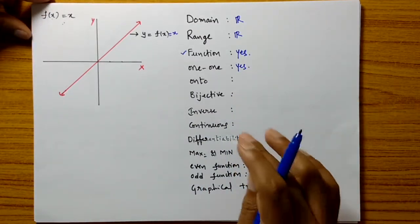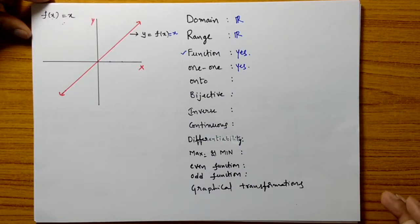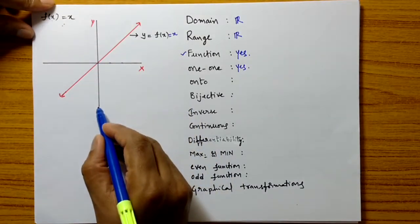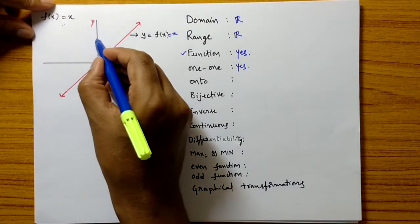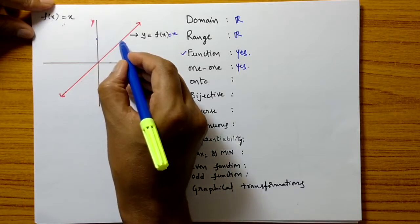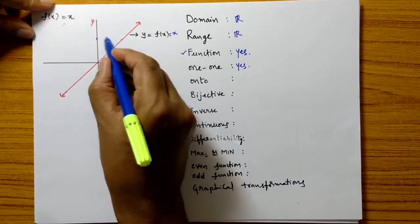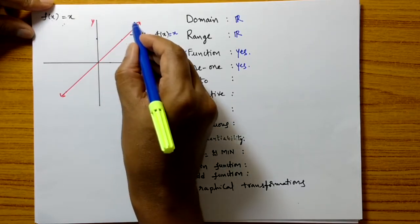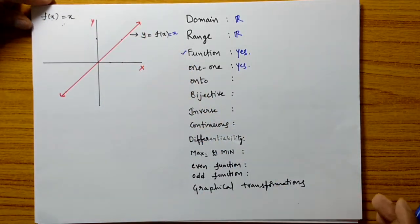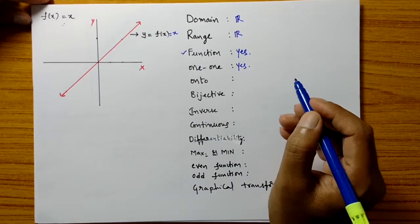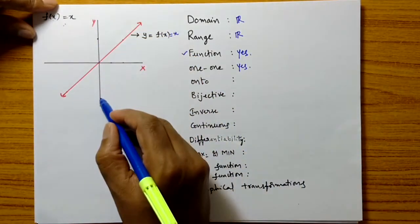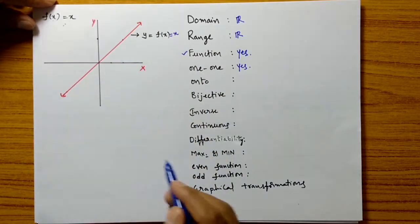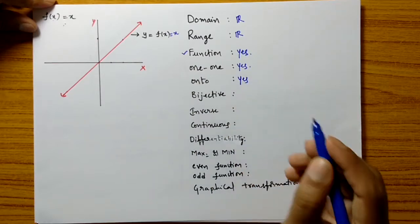Is it an onto function? Yes, it is an onto function. For every element in the co-domain set, there exists at least one preimage. If you take any y value, a corresponding x value will exist. So for every element in the co-domain set, there exists at least one preimage in the domain set. It is an onto function.